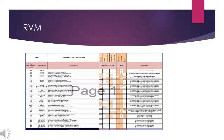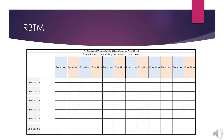The Requirements Bi-Directional Traceability Matrix (RBTM) links requirements throughout the validation process, ensuring all requirements defined for the system are tested. It serves as a tool for the validation team to ensure requirements are not lost and for auditors to review the validation document. The matrix has two blank spaces between each function and use case: one for forward traceability from use case to function, and one for backward traceability from function to use case.